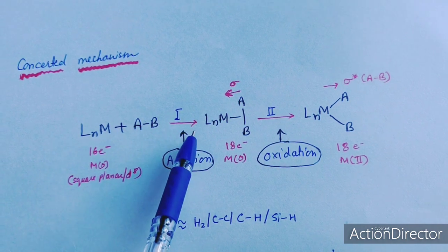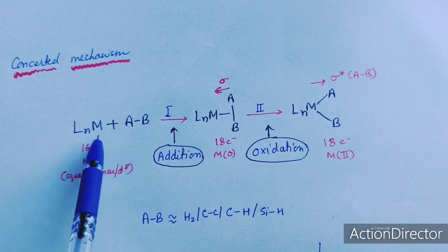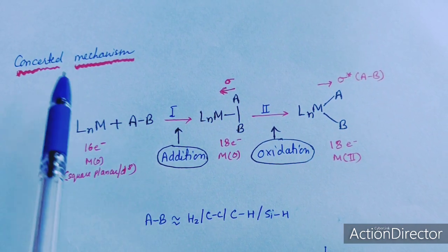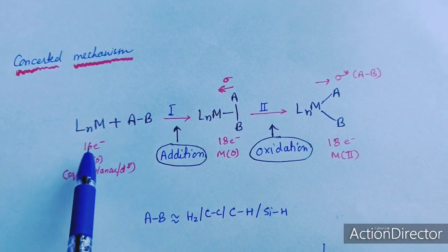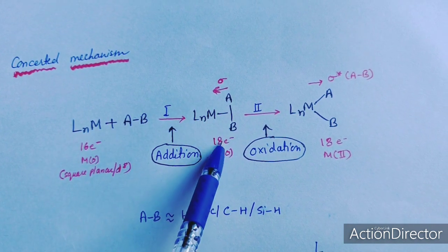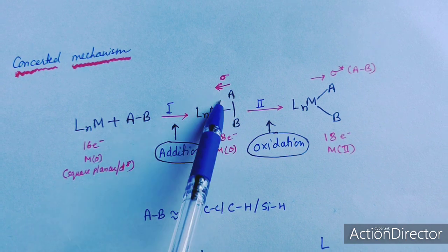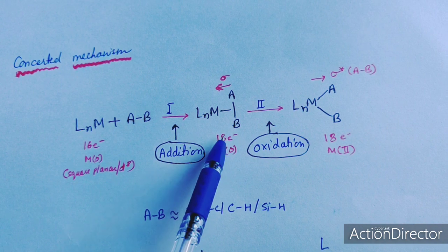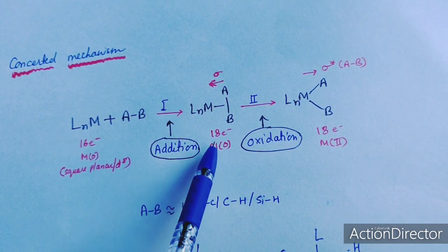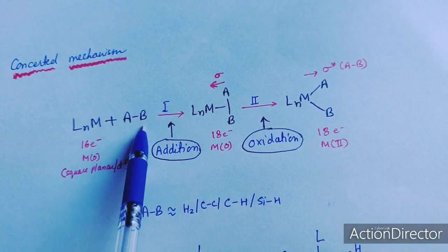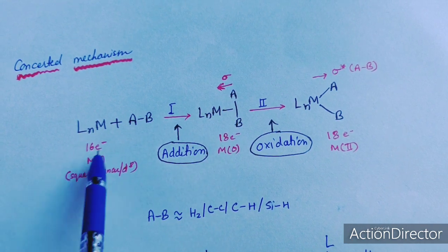Assuming a square planar complex with a 16-electron system and zero oxidation state: in the first step, the non-polar reagent AB adds to the metal — this is the addition step. In this step, the electron count increases by 2: from 16 it becomes an 18-electron system because AB donates its electrons to the metal center. However, the oxidation state of the metal remains unchanged — this first step is addition only.